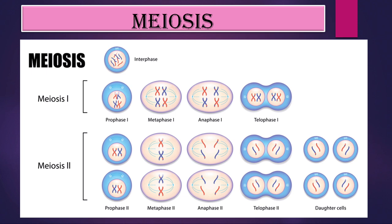Meiosis is made up of two sub-stages: meiosis 1 and meiosis 2. Meiosis 1 has four sub-stages: prophase 1, metaphase 1, anaphase 1, and telophase 1. Meiosis 2 similarly has prophase 2, metaphase 2, anaphase 2, and telophase 2. After that, cytokinesis takes place and four cells are formed.